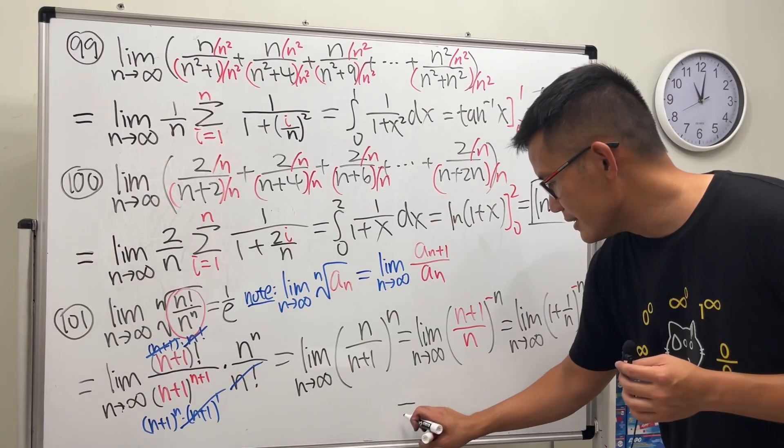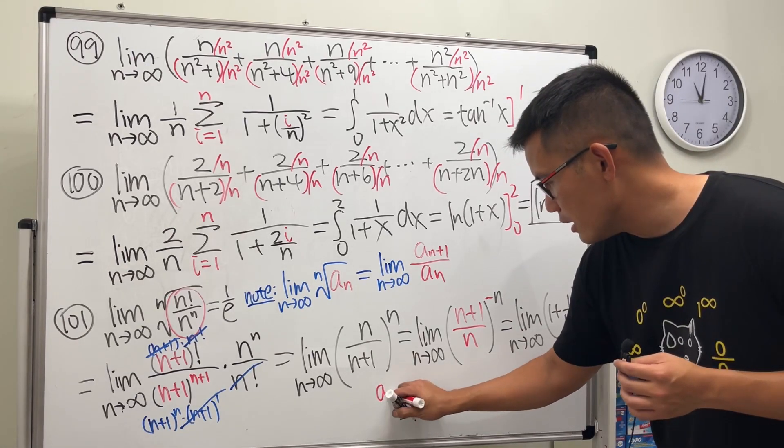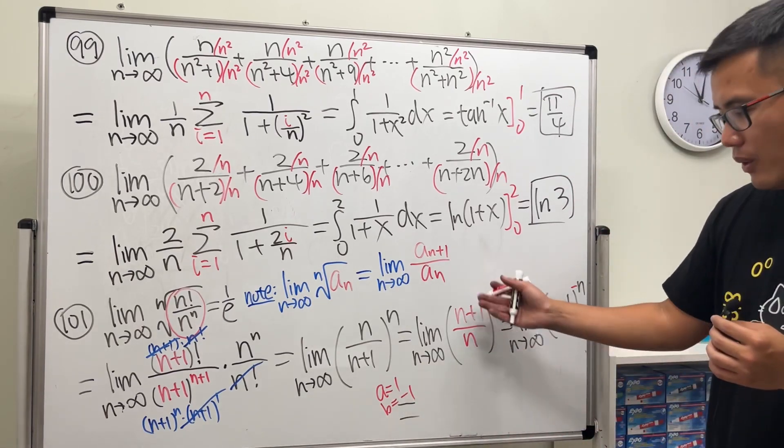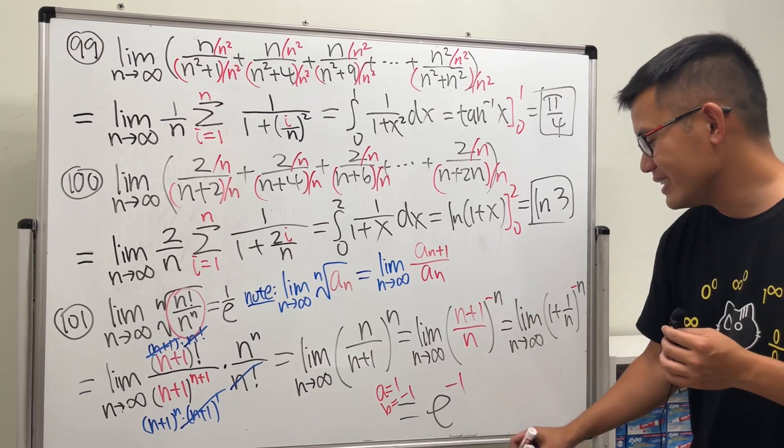And you know it, ladies and gentlemen, a is 1, b is equal to negative 1. So all in all, the answer is e to the 1 times negative 1, which is e to the negative 1.